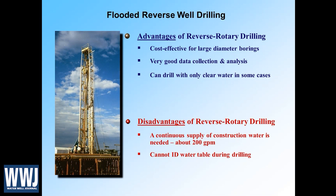It does have its disadvantages. Because of the nature of flooded reverse, we're adding water to the borehole faster than the earth can soak it away, meaning we need a construction water source. In a very remote area where water needs to be trucked to the site, this may not be the way to go. But if we have a water source — say a hydrant nearby — we're looking at around 200 gallons per minute, though it may vary depending on the formation we're drilling.